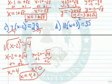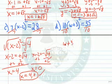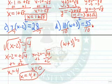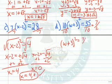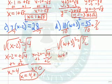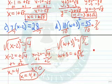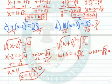As a final example, consider 10 times w plus 3 squared equals 35. We begin by dividing both sides by 10, giving w plus 3 squared equals 35 tenths. Both numerator and denominator can be divided by 5, leaving 7 halves. Taking the square root of both sides gives w plus 3 equals plus or minus the square root of 7 halves.